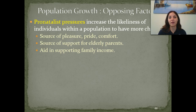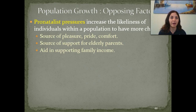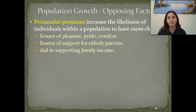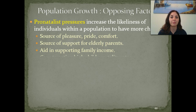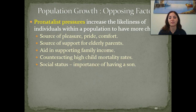Having more children can also aid in supporting family income. Even nowadays, many families have large numbers of children who go to work at an early age to contribute to the family income, and this counteracts high child mortality rates. Social status is also important — it's especially important to have a son in many areas because that son passes on the family name to the next generation.